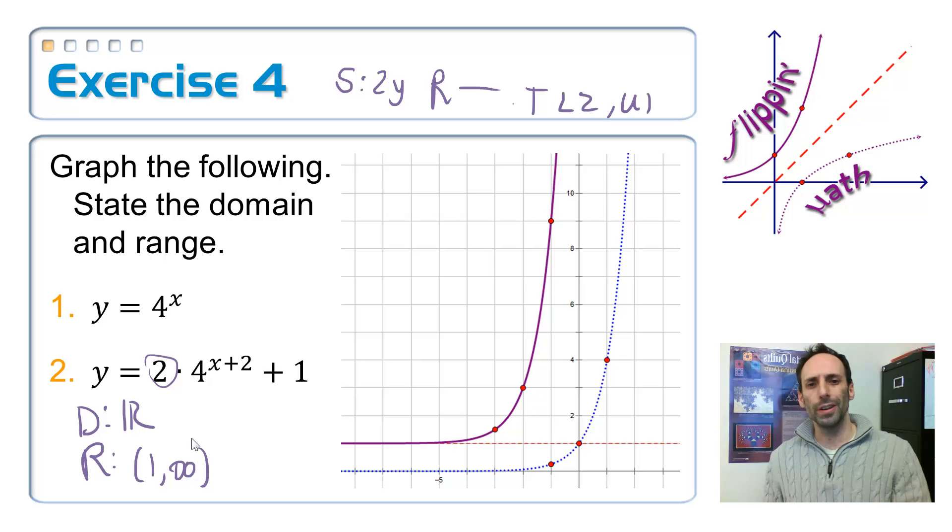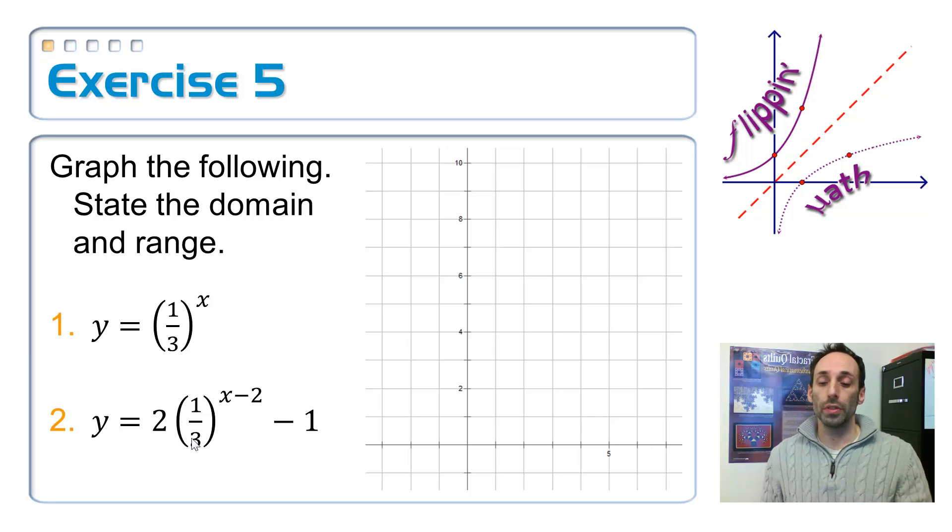So let's do the same thing on a decay function. So on the decay function, I'm going to start with graphing 1 third raised to the x as a parent function. So I'm taking powers of 1 third. So if I take the negative second power, I'm at 9. If I take the negative first power, I'm at 3. I'm at 1 for the 0 power and the third. I would only expect those points.